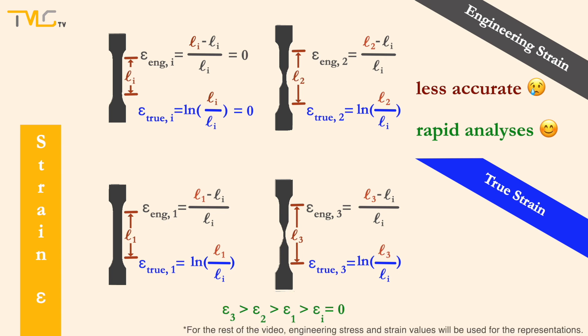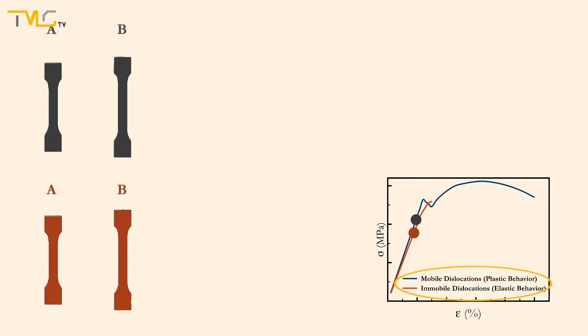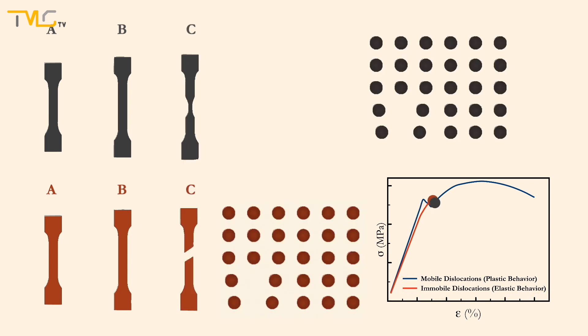As the applied load increases, the specimen starts to deform elastically. Such deformation is observed at low strain values. Depending on the dislocation motion characteristics of the material, which was covered in video 1.3, as we get closer to the plastic deformation region, material may fail if the dislocations are immobile, or it may start deforming plastically if the dislocations are mobile.